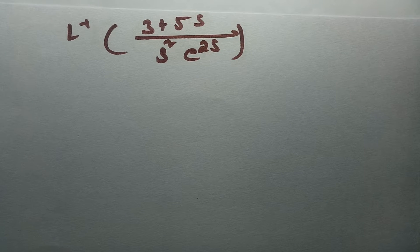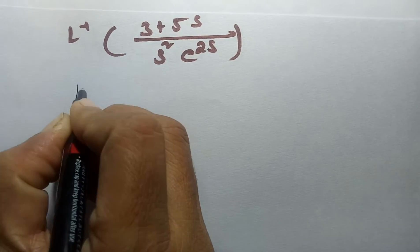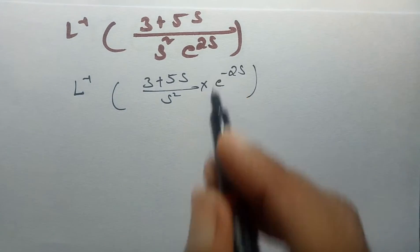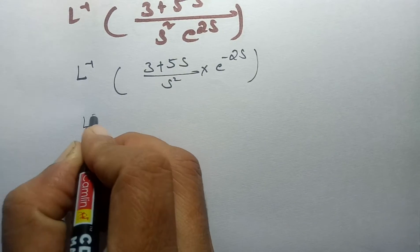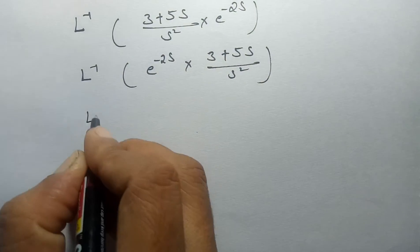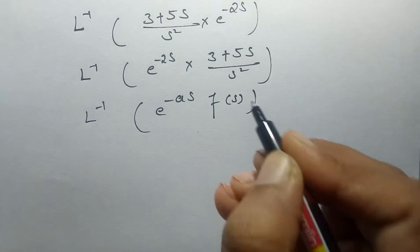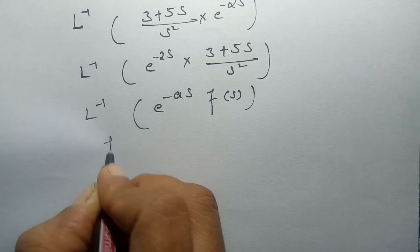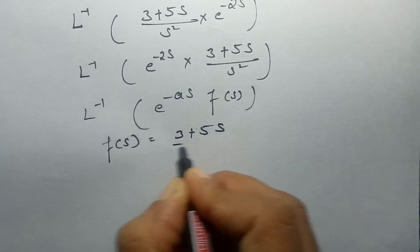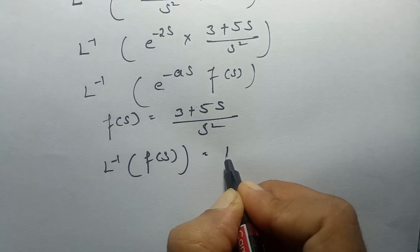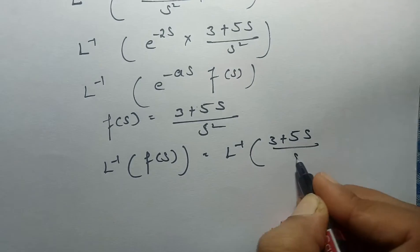The question is: find the inverse Laplace transform of (3+5s)/s² · e^(2s). I rewrite this as (3+5s)/s² · e^(-2s) by taking it to the numerator. So the question becomes the inverse Laplace transform of e^(-2s) · (3+5s)/s², which is of the form e^(-as)·F(s). I take F(s) = (3+5s)/s² and apply the inverse Laplace transform on both sides.